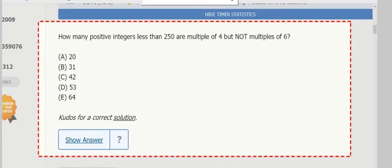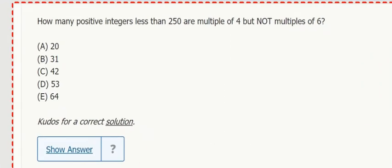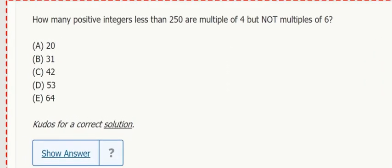Okay, positive integers less than 250 are multiples of 4, but not multiples of 6. So in order to first of all count the multiples of whatever here, we can just divide and round down because we're starting at 1, 1 to 250.